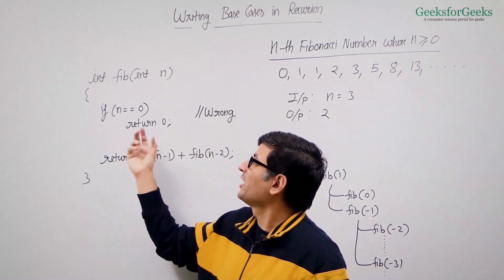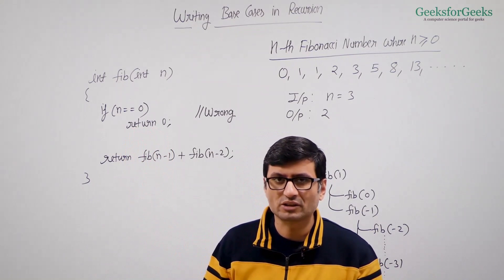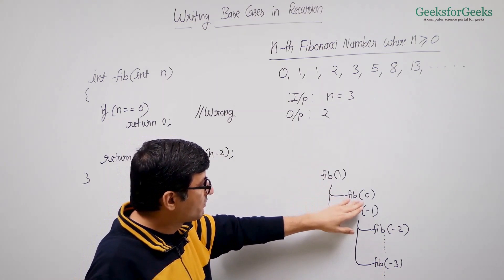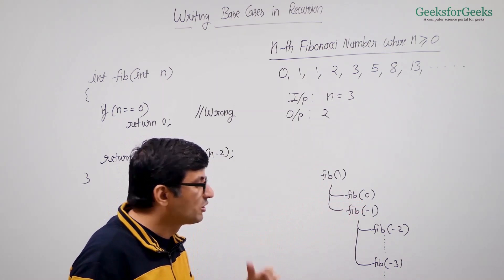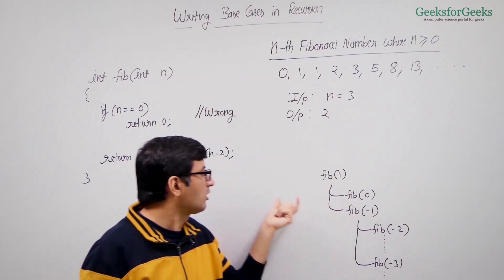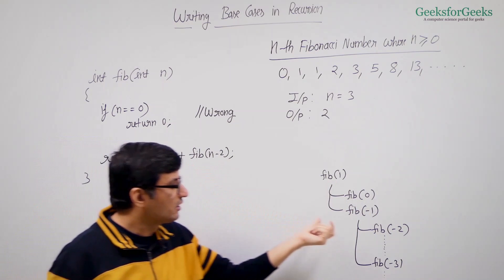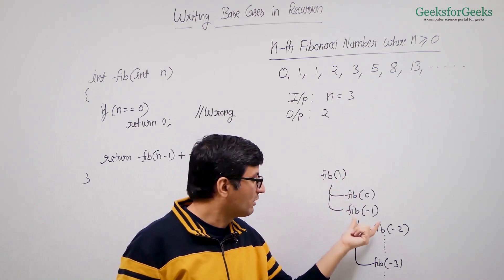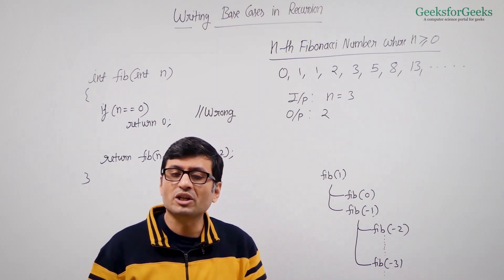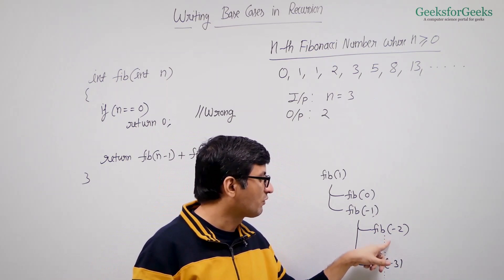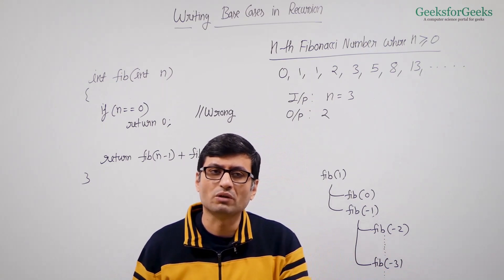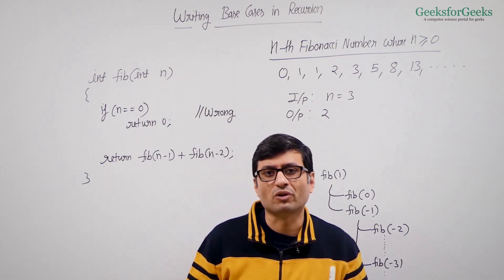Let us see what happens when we write only n equal to 0, return 0 as the base case — this is wrong code. When you call Fibonacci(1), it calls Fibonacci(0) which finishes immediately, but then it makes one more call for Fibonacci(minus 1) because we do not handle 1 explicitly. When minus 1 is called, it calls Fibonacci(minus 2), then Fibonacci(minus 3), and so on — Fibonacci(minus 2) also calls minus 3 and minus 4, continuing indefinitely. You will get a stack overflow exception in Java and a segmentation fault in C++.